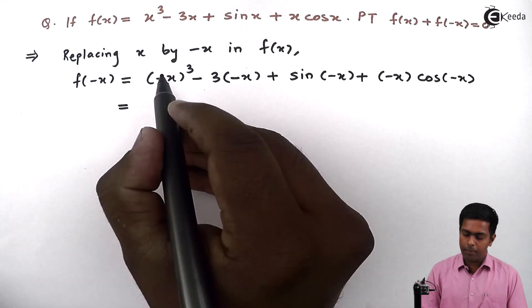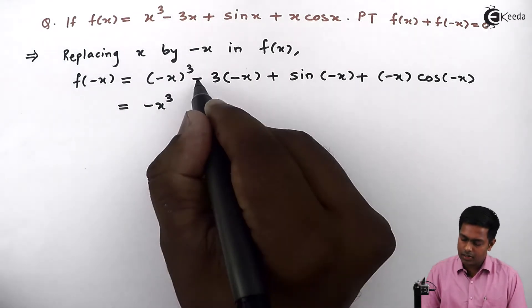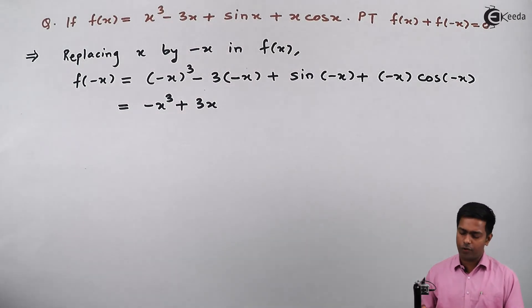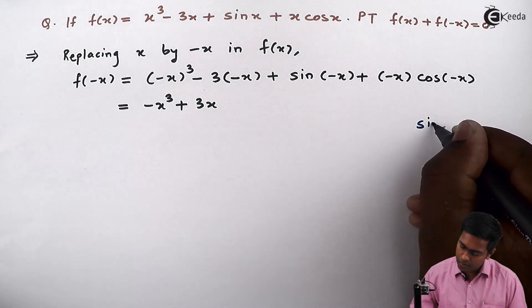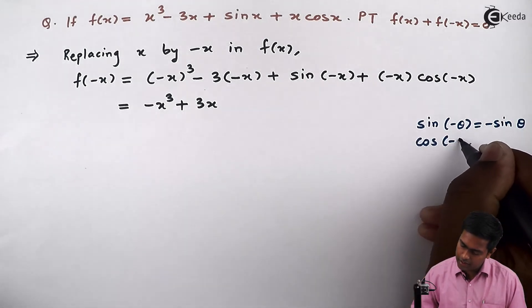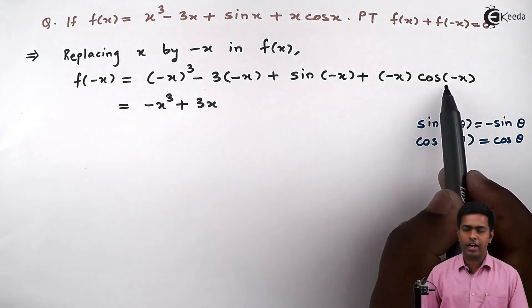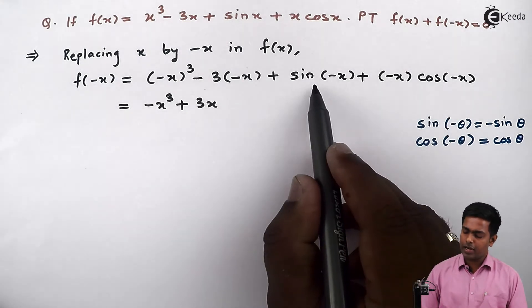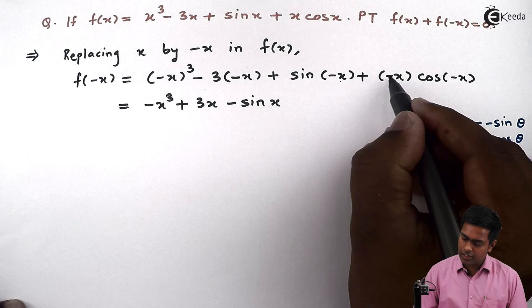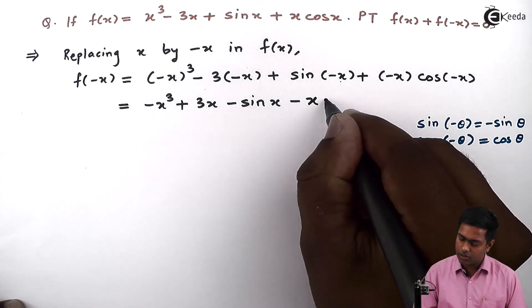Now (-x)³ as we all know is -x³. Next, this minus minus will give us plus 3x. Now sin of minus x, we know the formula that sin(-θ) is -sin θ and cos(-θ) is cos θ. So I will use these two formulas here for sin and cos. So the sin(-x) will become -sin x by this formula. Next plus -x and cos(-x) by the formula is cos x, so cos x as it is.